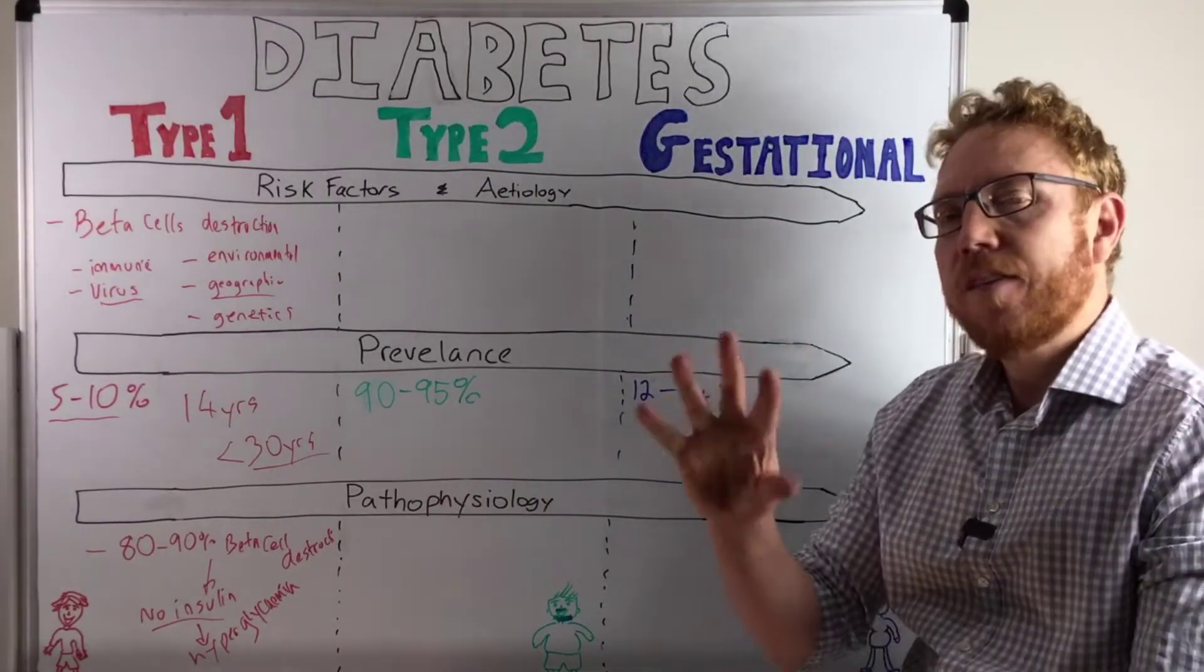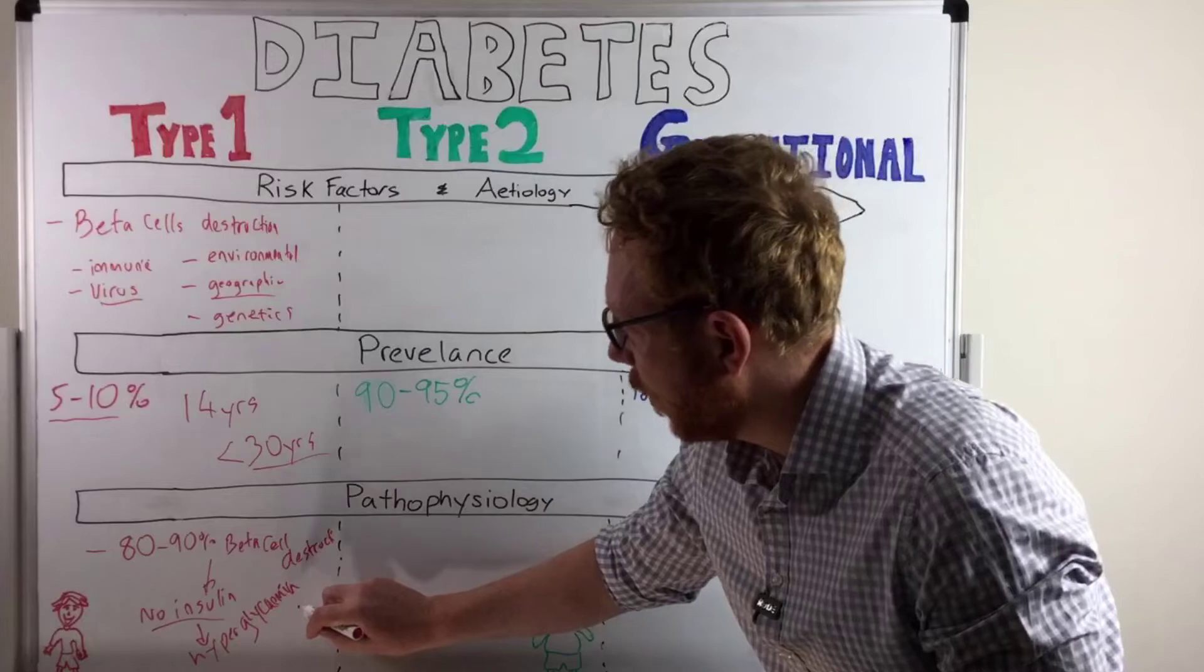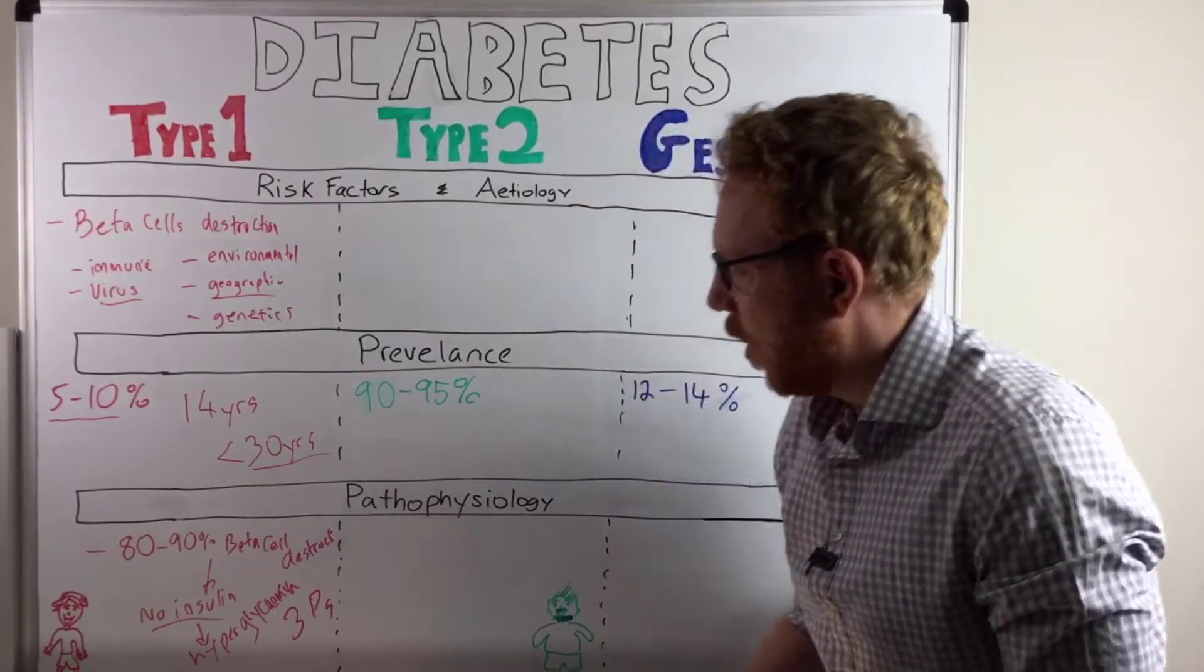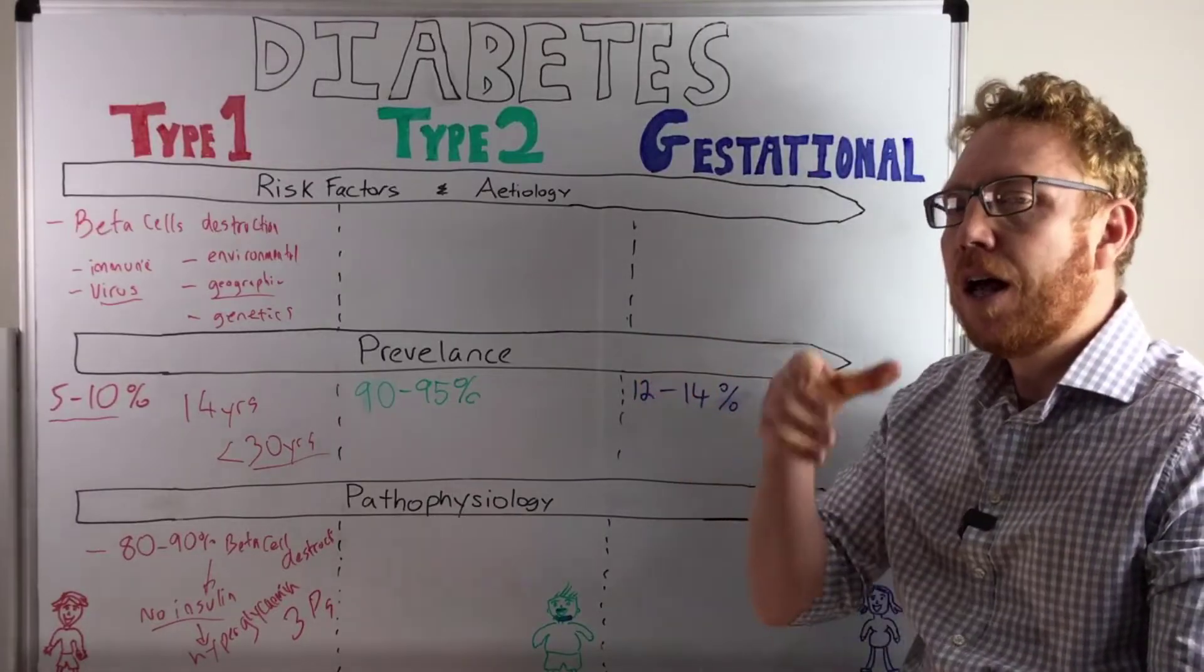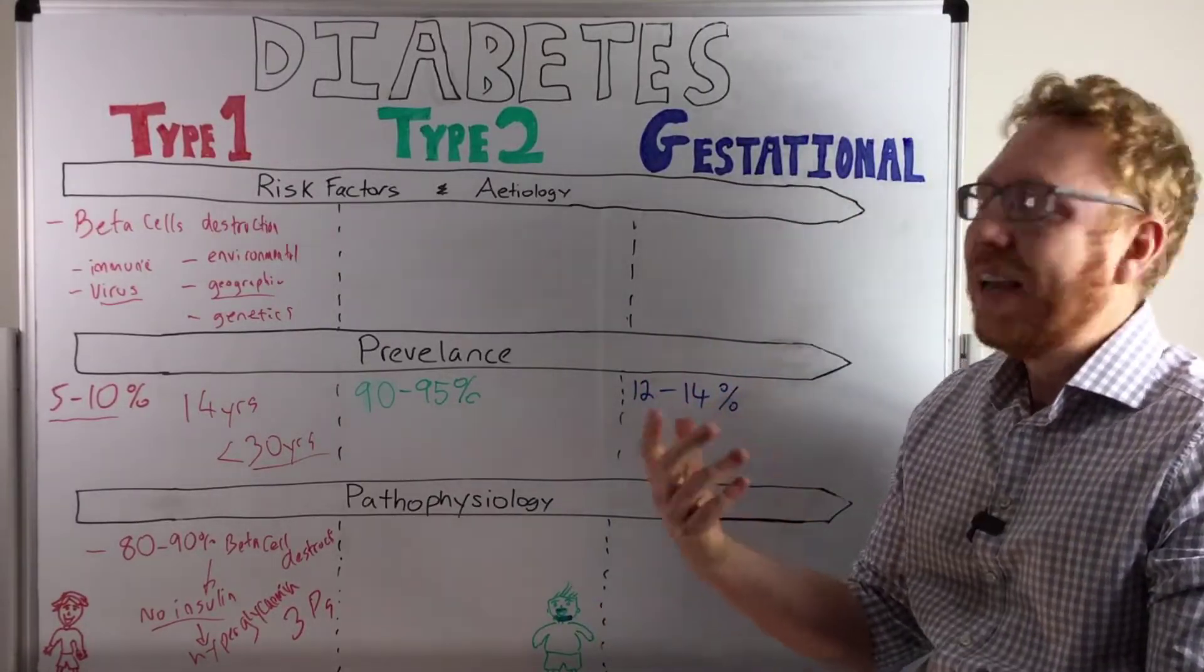In terms of how they present, there's a couple of ways to remember, there's what we call the three P's, which is polyuria, that means a lot of urine, polydipsia, a lot of drinking, and polyphagia, a lot of eating.